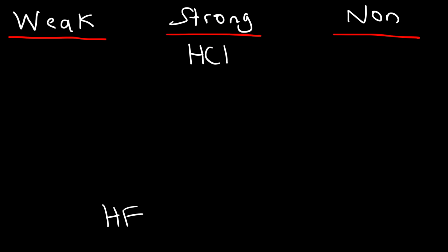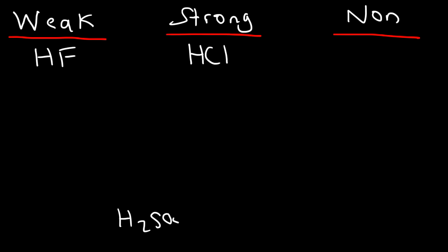What about HF? HF is a weak acid — it doesn't ionize very well, so HF is a weak electrolyte. What about H2SO4, sulfuric acid? Sulfuric acid is one of the strong acids you need to know, so this would go in the strong electrolyte column.